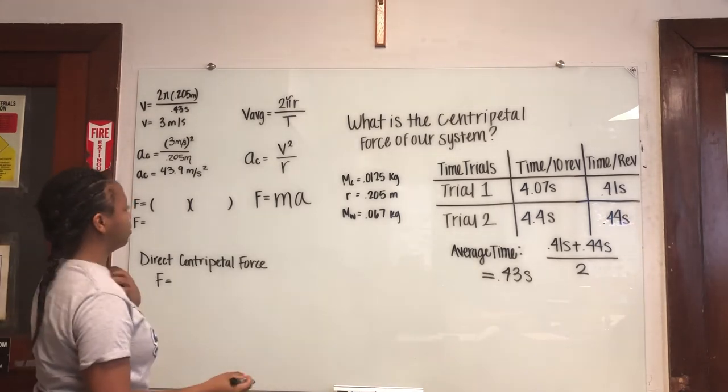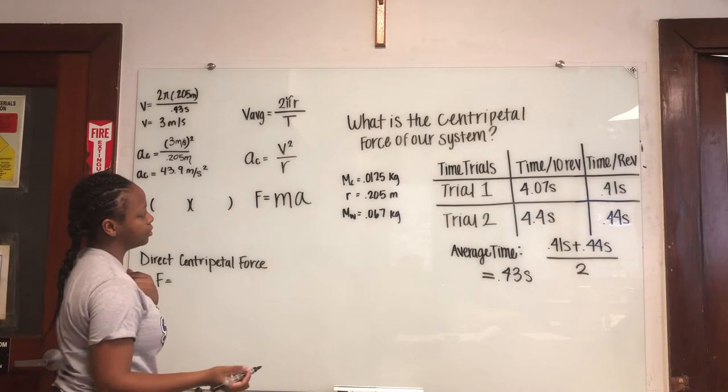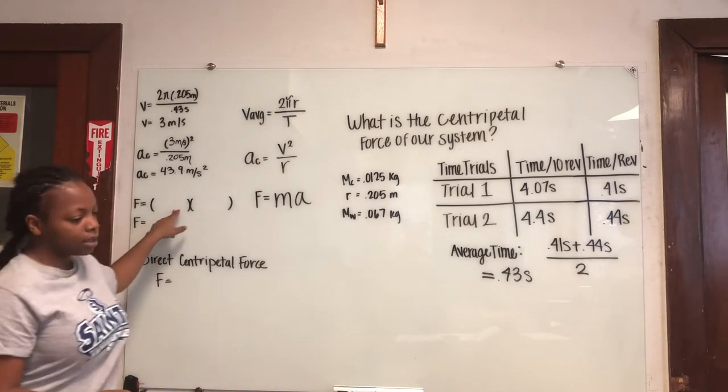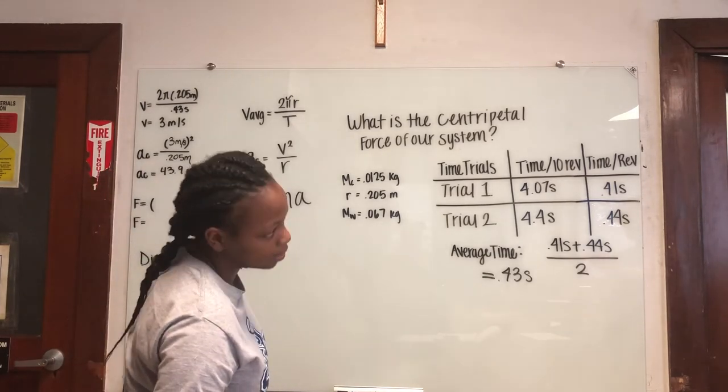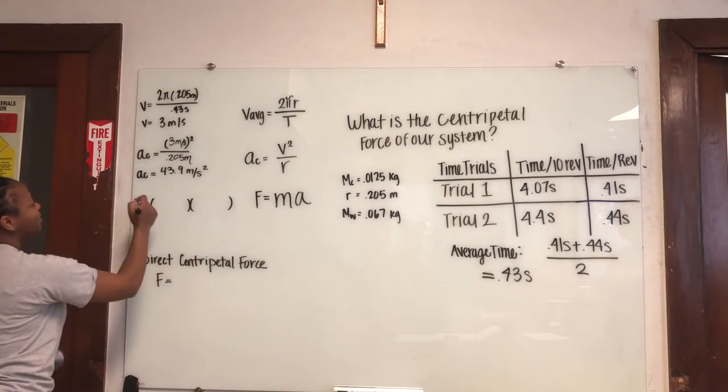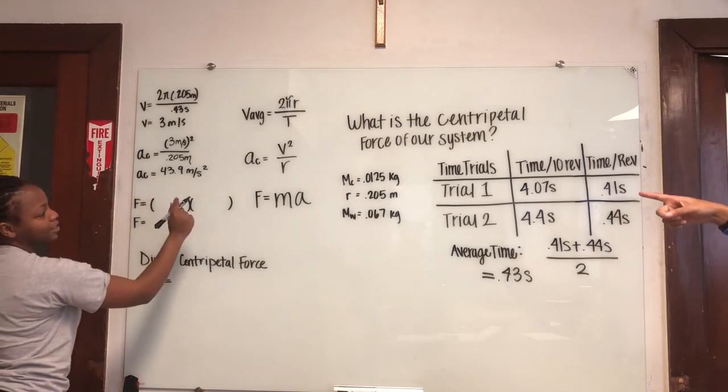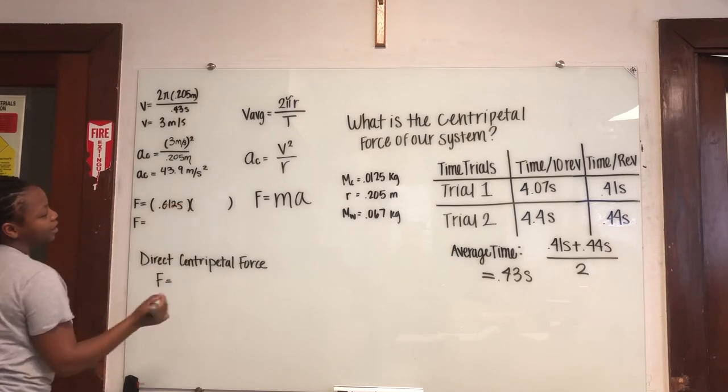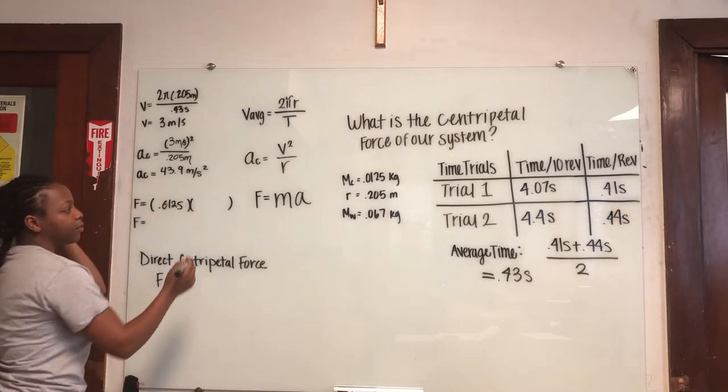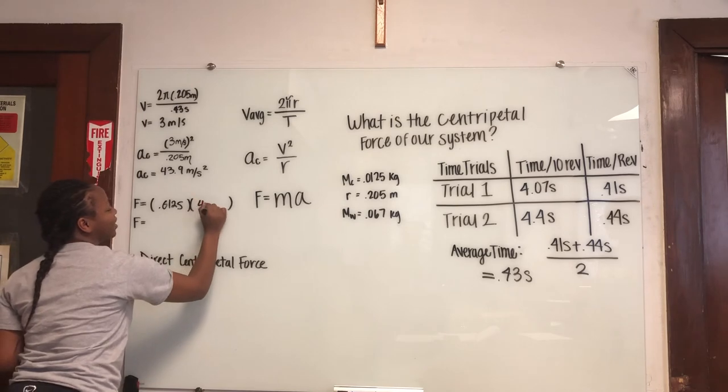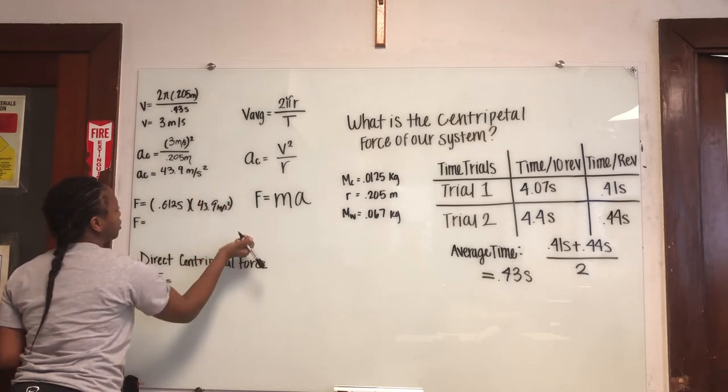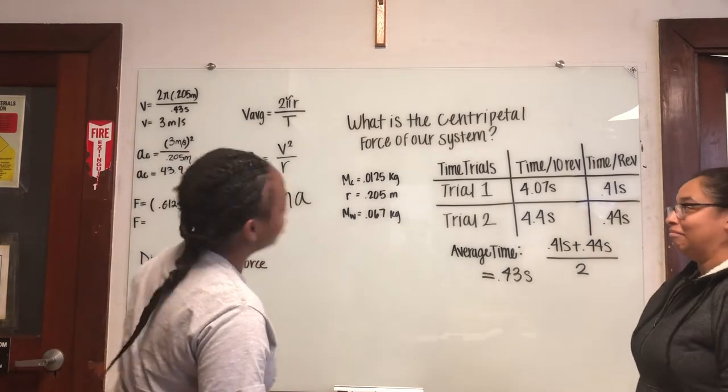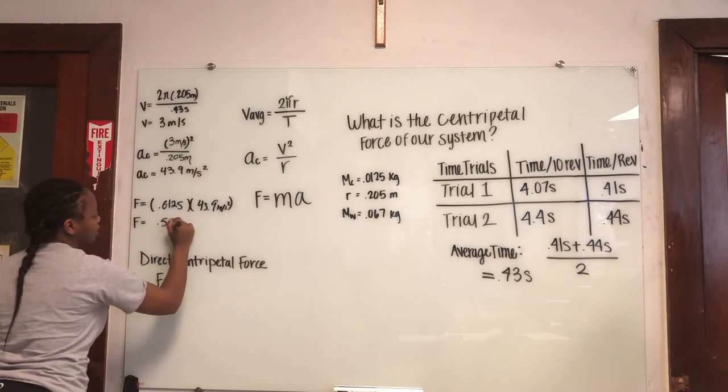And so here we found the force. So it's mass times acceleration. So the mass would be the mass of the clip, which is 0.0125, and then our acceleration is the 43.9 meters per second squared. And so for the force, it ended up being 0.55 newtons.